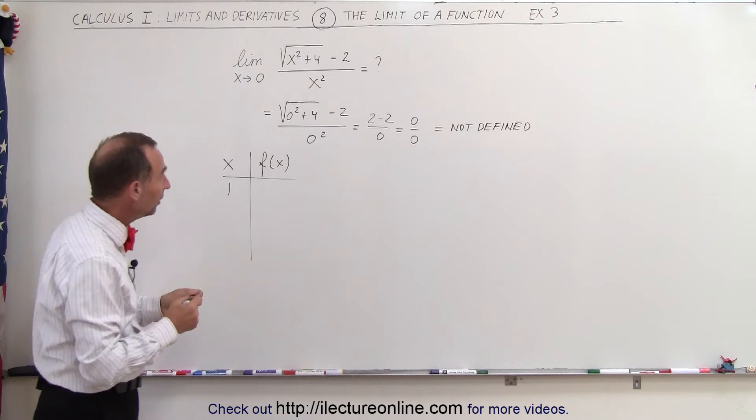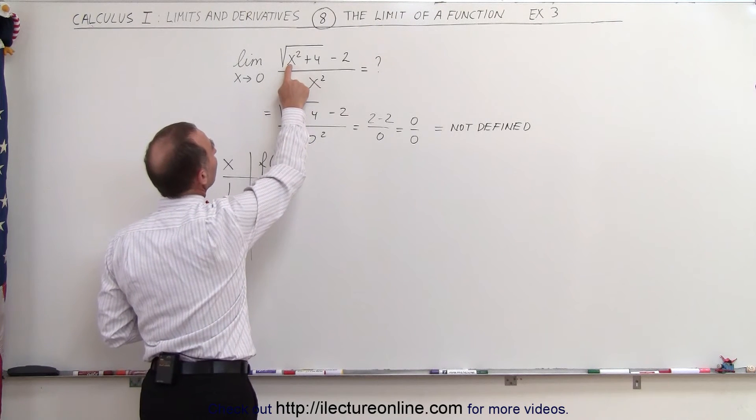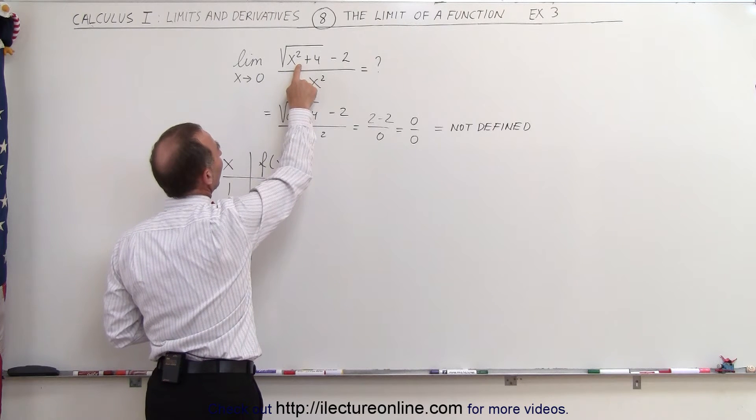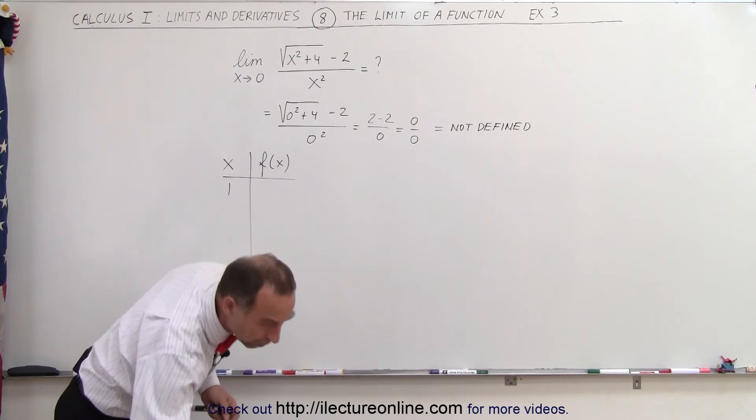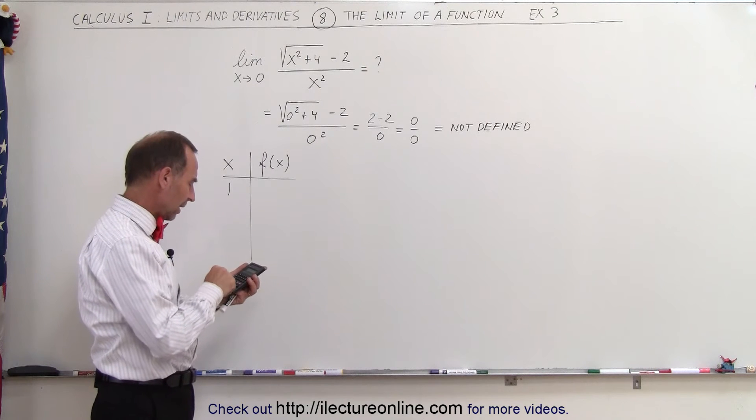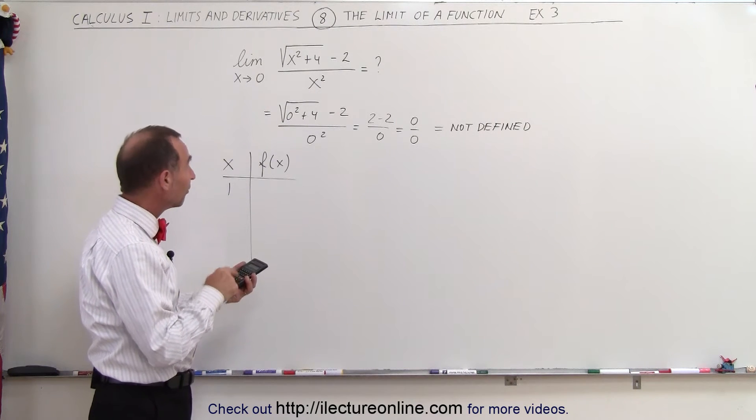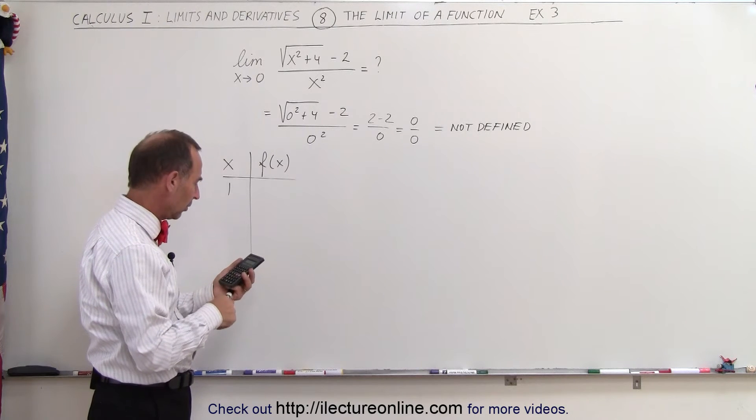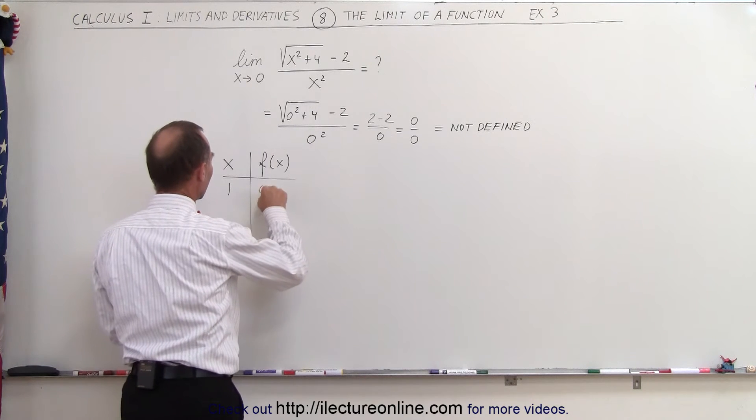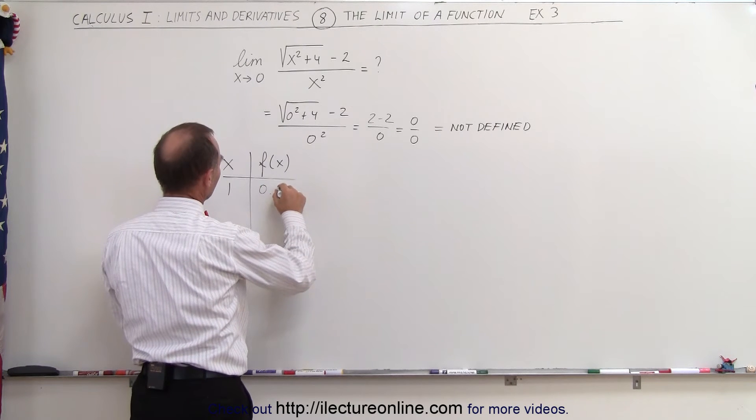Well, if x is equal to 1, we have 1 squared plus 4, that would be the square root of 5, minus 2 divided by 1 squared. So let's go ahead and do that. So that would be, take the square root of 5, minus 2, and divide by 1 equals, and so we get 0.236.